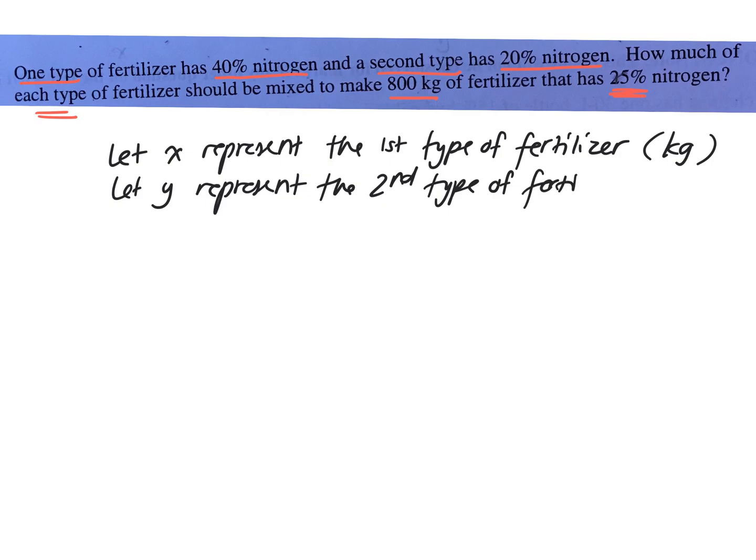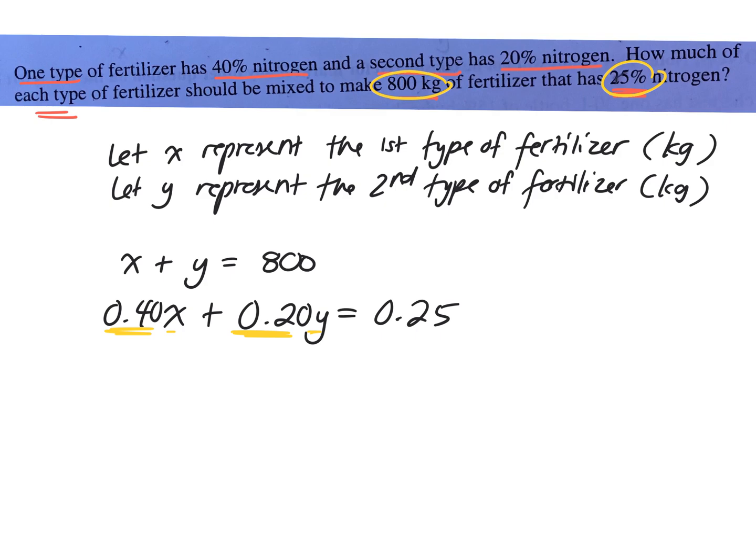So the amount, yeah, right. Okay, good. Then it'd be x plus y equals 800 kilograms. Excellent. So your first equation is x + y = 800 because we know that the total is 800. Then 0.4x + 0.2y = 0.25 times 800. Excellent, because it's 40% of the first type, 20% of the second type, and then altogether it's 25% nitrogen of the total.